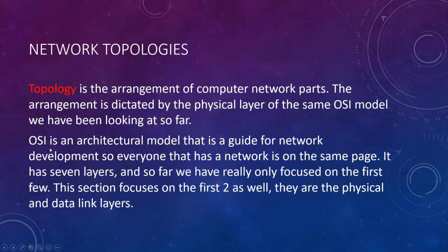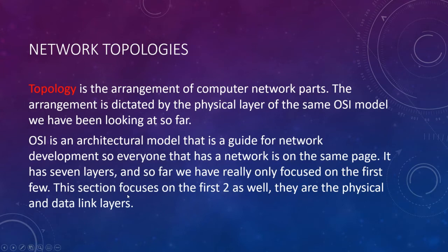The OSI, or Open Systems Interconnect, is an architectural model that is the guide for network development so that everyone's network can interconnect with each other. The model has seven layers. We've focused on up to about layers four or five when talking about product protocols. In this ILM, we'll basically focus on the first two layers: the physical layer — how we put it together — and the data link layer — how data gets packaged.